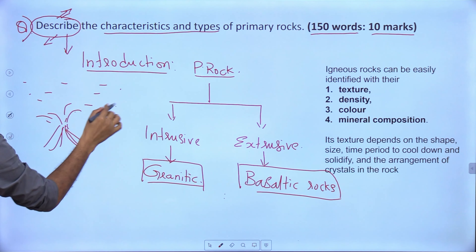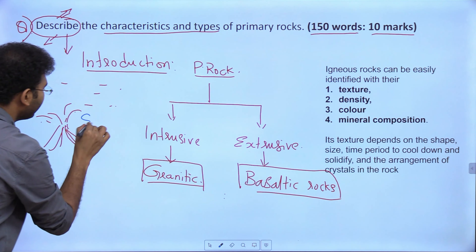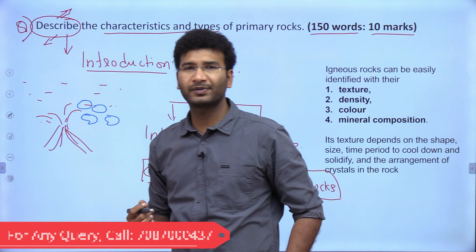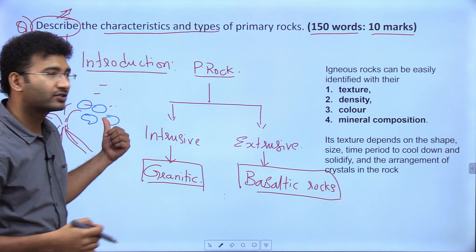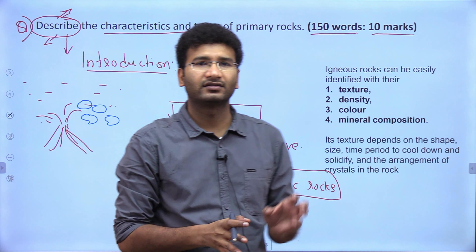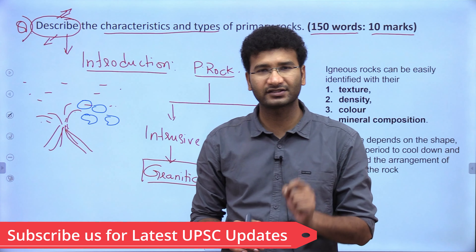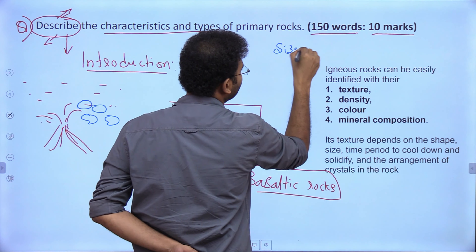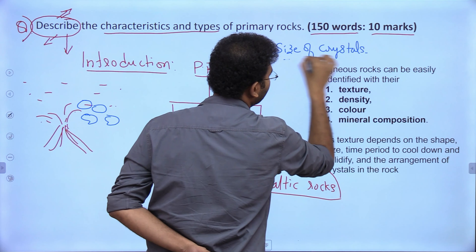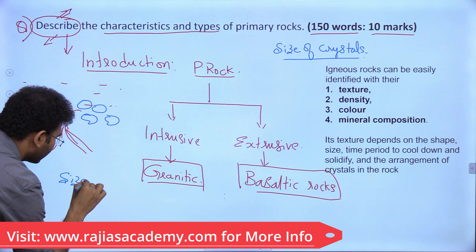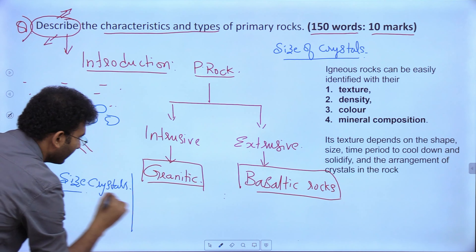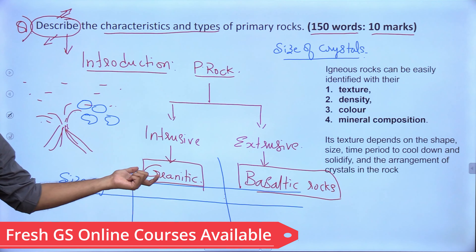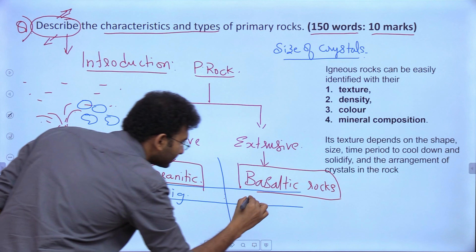Suppose volcanic activity leads to a volcano within the ocean — the rocks formed cool very fast. This process is called quenching. The crystal size depends on the nature of cooling: if cooled very slowly, the crystals will be big; if cooled very fast, the crystals will be small. For granite it is slow cooling with big crystals, and for basalt it is fast cooling with small crystals.